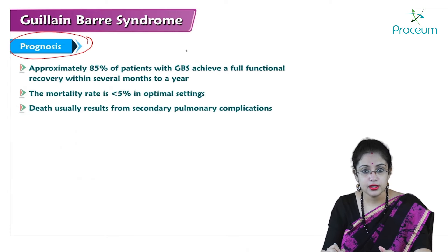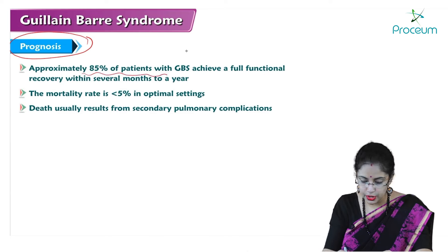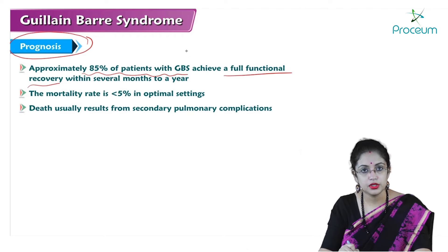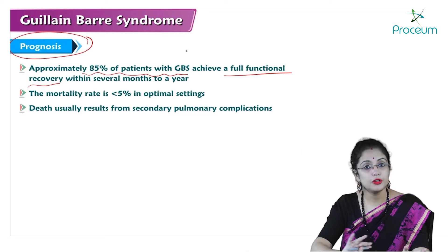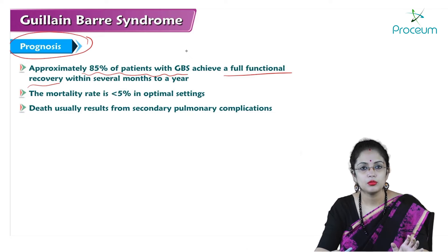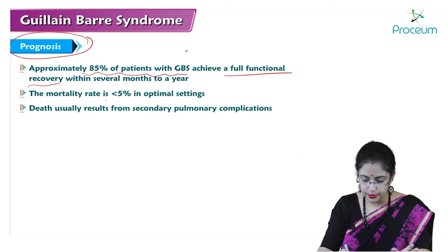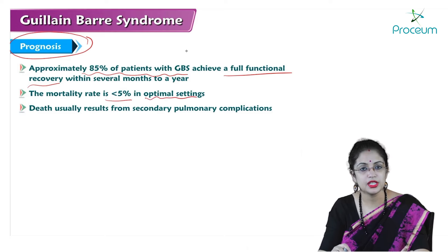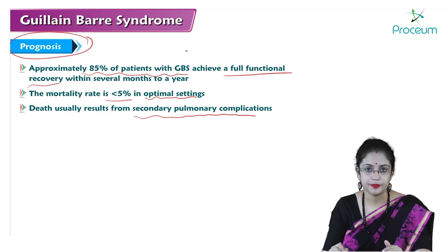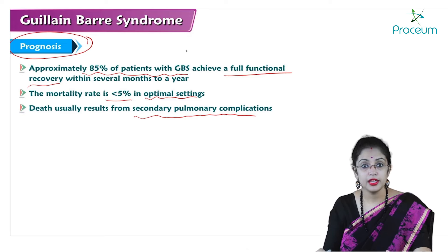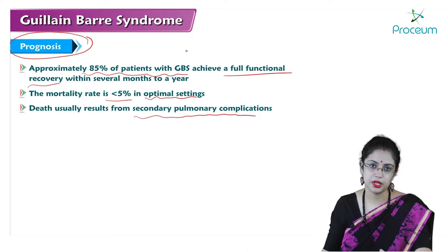Prognosis: approximately 85% of patients with Guillain-Barré syndrome achieve full functional recovery within several months to years, with no residual deficit. Mortality rate is less than 5% even in optimal settings. Death most commonly results from secondary pulmonary complications. This concludes the discussion on Guillain-Barré syndrome.